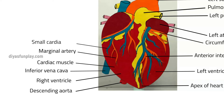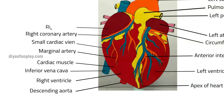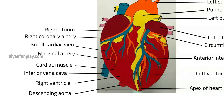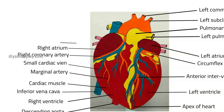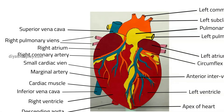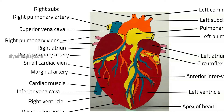Small Cardiac Vein. Right Coronary Artery. Right Atrium. Right Pulmonary Veins. Superior Vena Cava. Right Pulmonary Artery.